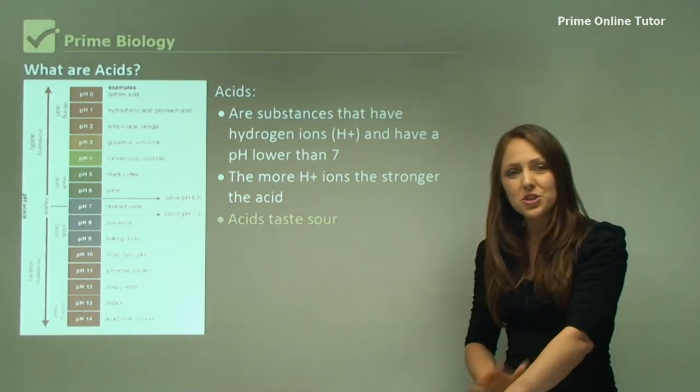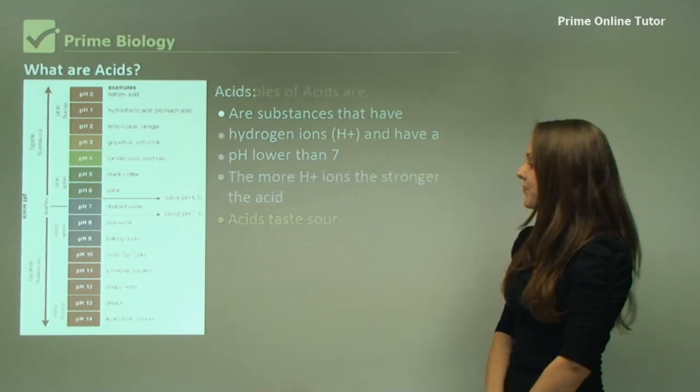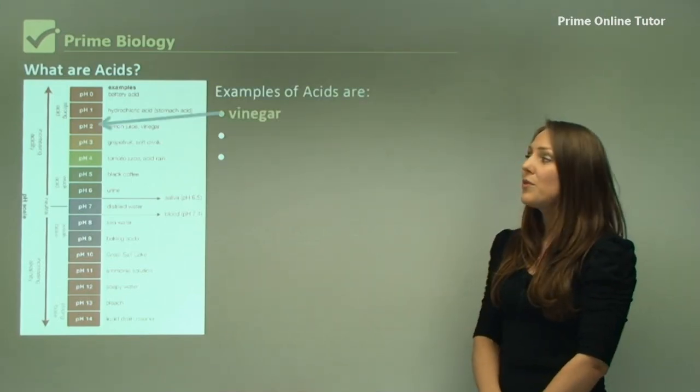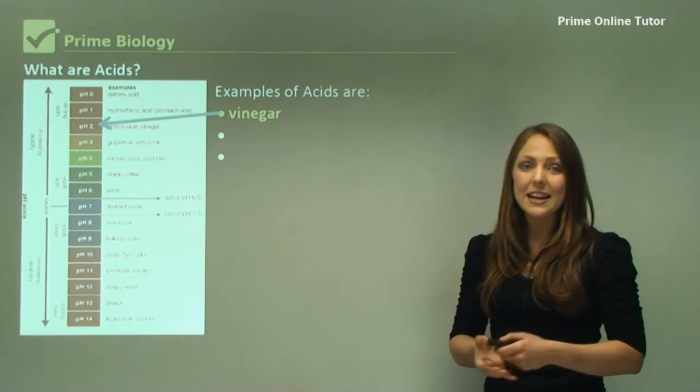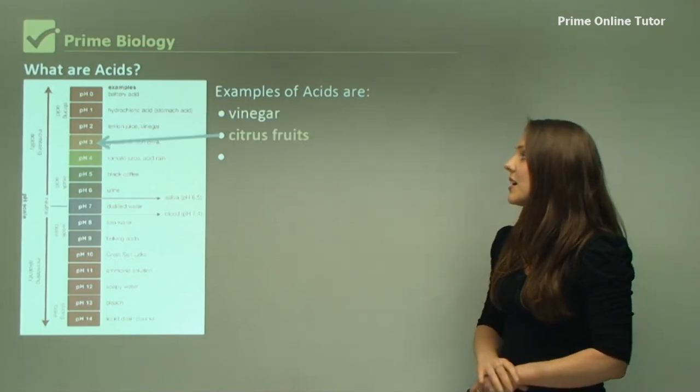The best way to get rid of an acid is to wash it or dilute it with water. Examples of acids: we've got vinegar, and we put vinegar on our salad so it's still healthy to eat and fine for us to eat, citrus fruits, and Coca-Cola.